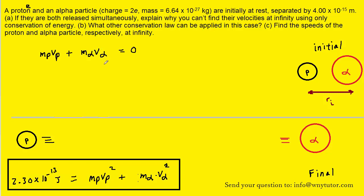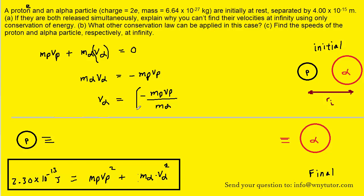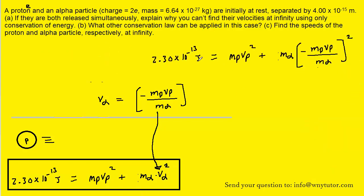We now have a second equation with the same two unknowns. We isolate V_alpha by subtracting the proton's momentum term to the other side and dividing by the mass of the alpha particle. We then substitute this expression for V_alpha into the first equation, leaving only one unknown: the velocity of the proton.